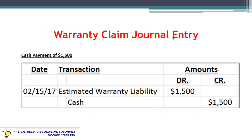Earlier I talked about three potential ways we can record a warranty claim as it comes through. This doesn't matter what year it comes through, as long as it's within the warranty period. In the first example, the claim is a cash payment of $1,500 for a particular defect in 2017, the next accounting period. We debit estimated warranty liability to reduce it — using some of that fund up — and credit cash for $1,500.